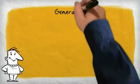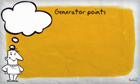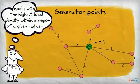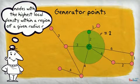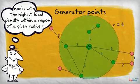In graphs, each node is characterized by the link density of its neighborhood. For generator points, we choose nodes with the highest local density within a region of a given radius. Varying this radius allows community detection at different scales.